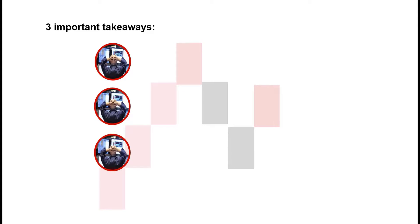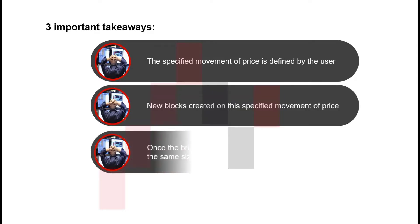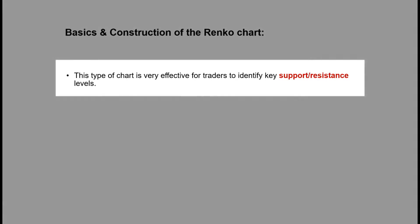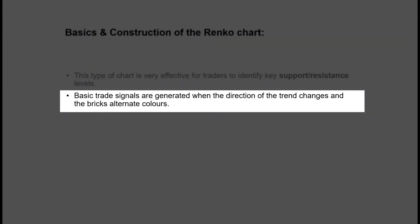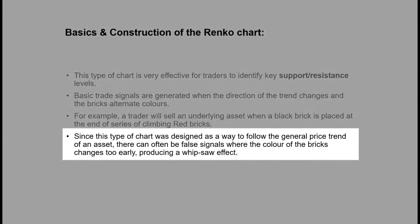Three important takeaways: first, the specified movement of price is defined by the user — bricks only move by what inputs you give it. Second, new blocks are created on this specified movement of price. Third, the brick size is determined by you, and once determined it always stays that size until you change it. Renko is a brilliant chart for looking at support and resistance because it squares it off with the block. Signals — changes in trend — are easier to see. A black brick placed at the end of a series of red bricks is as simple as a trading signal gets.